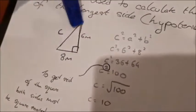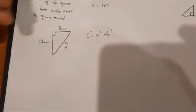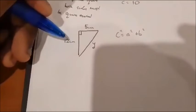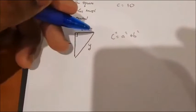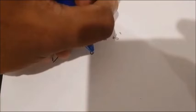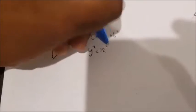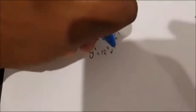The hypotenuse side length is 10. Let's go through this one together. We've got the height being 12, the base being 5, and the side length is y. So you'd write it as y squared equals 12 squared plus 5 squared.